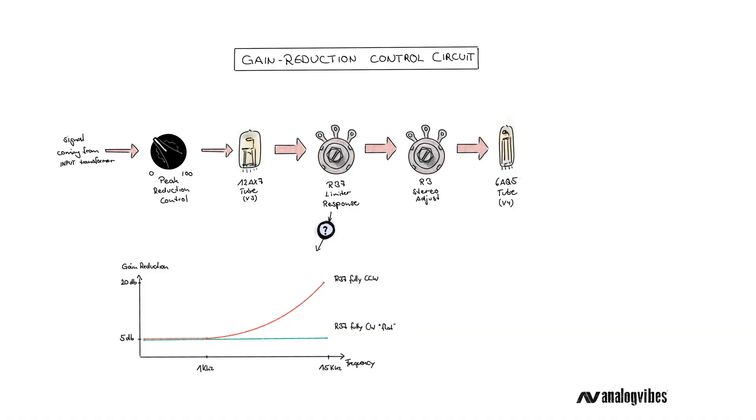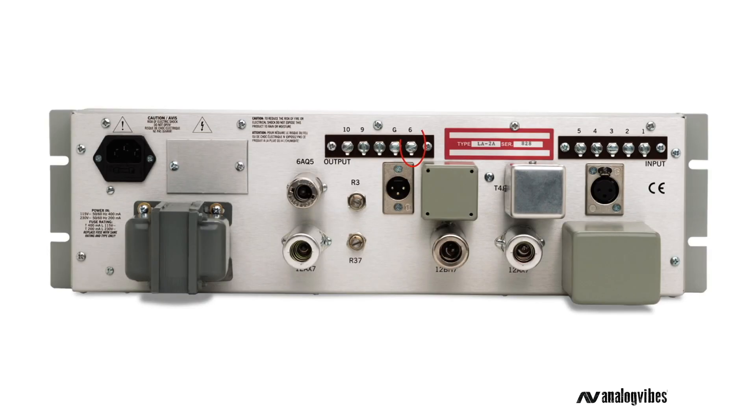But the stereo adjust pot R3 wouldn't carry that name if it wasn't for a second purpose. It's directly connected to the output screw terminal on the back of the unit, which allows for interconnecting two LA2As.